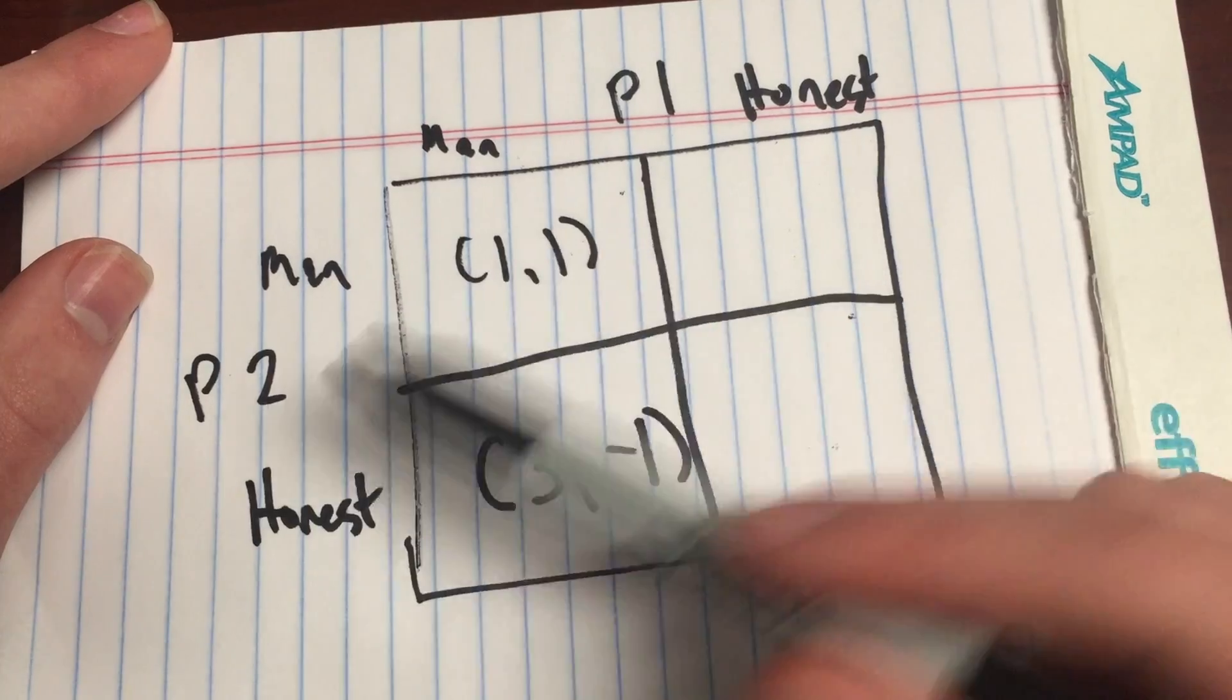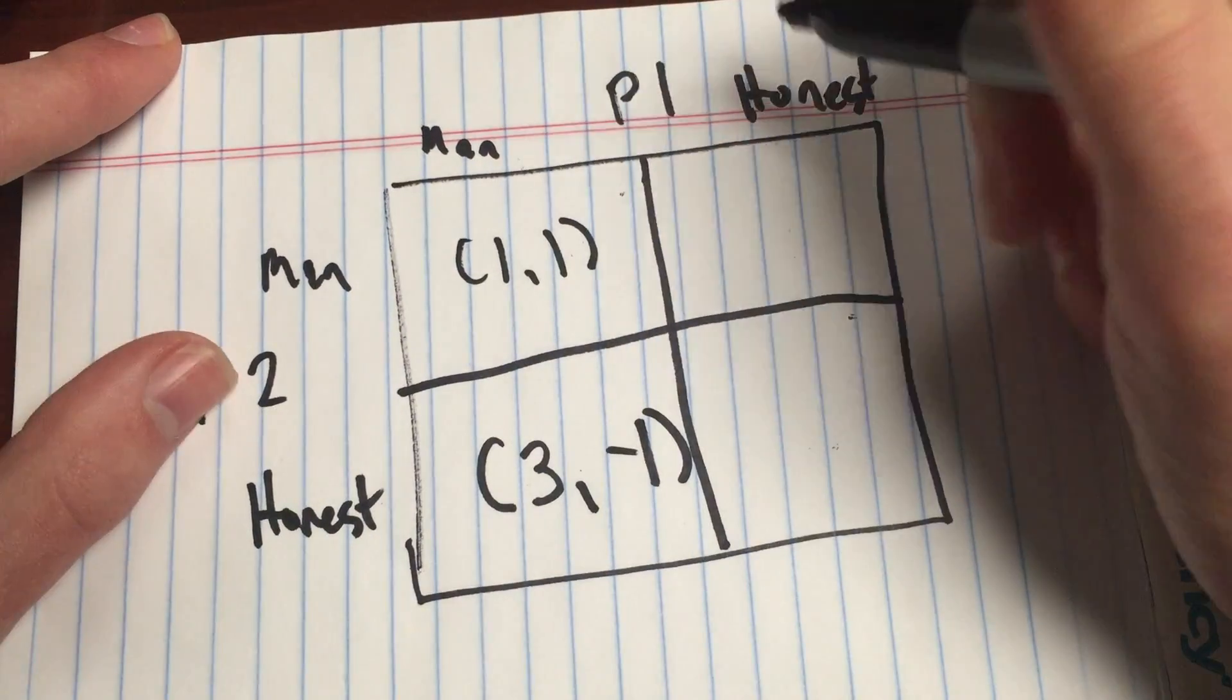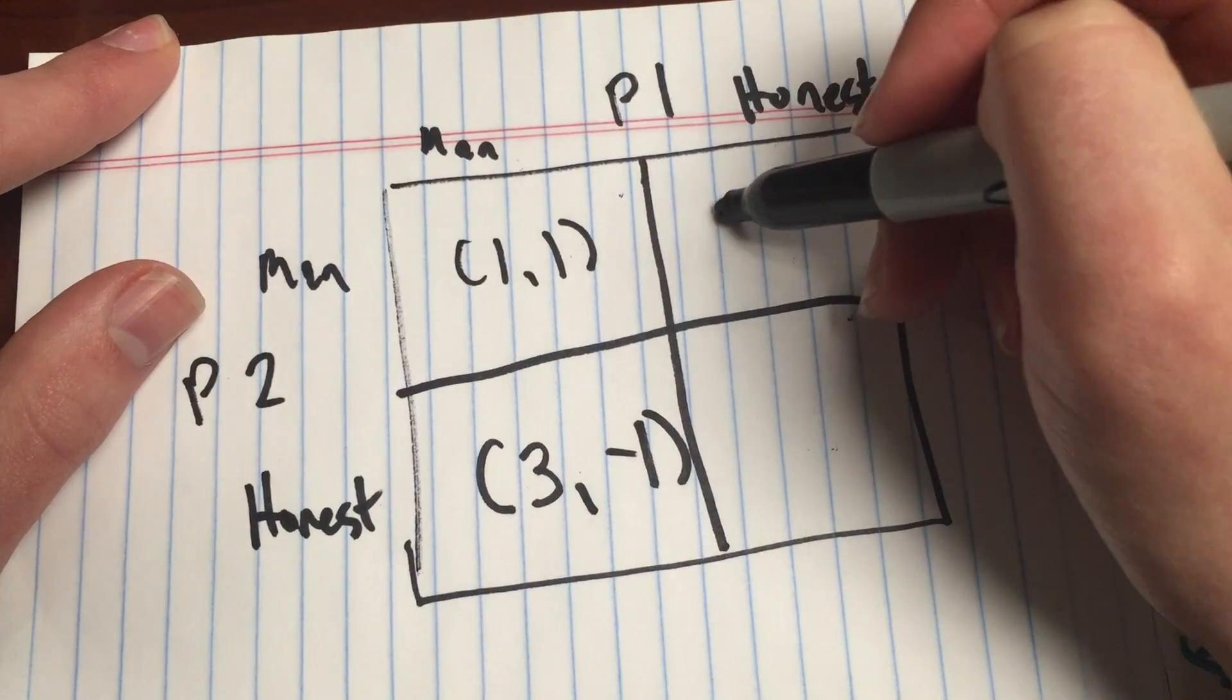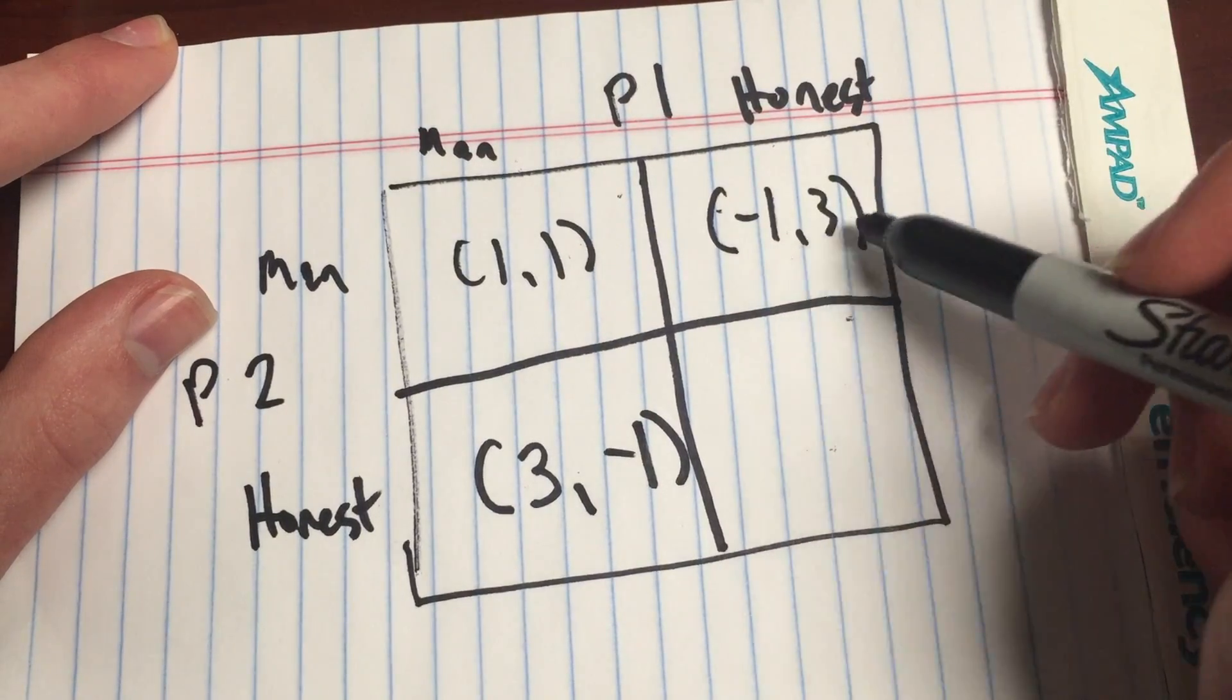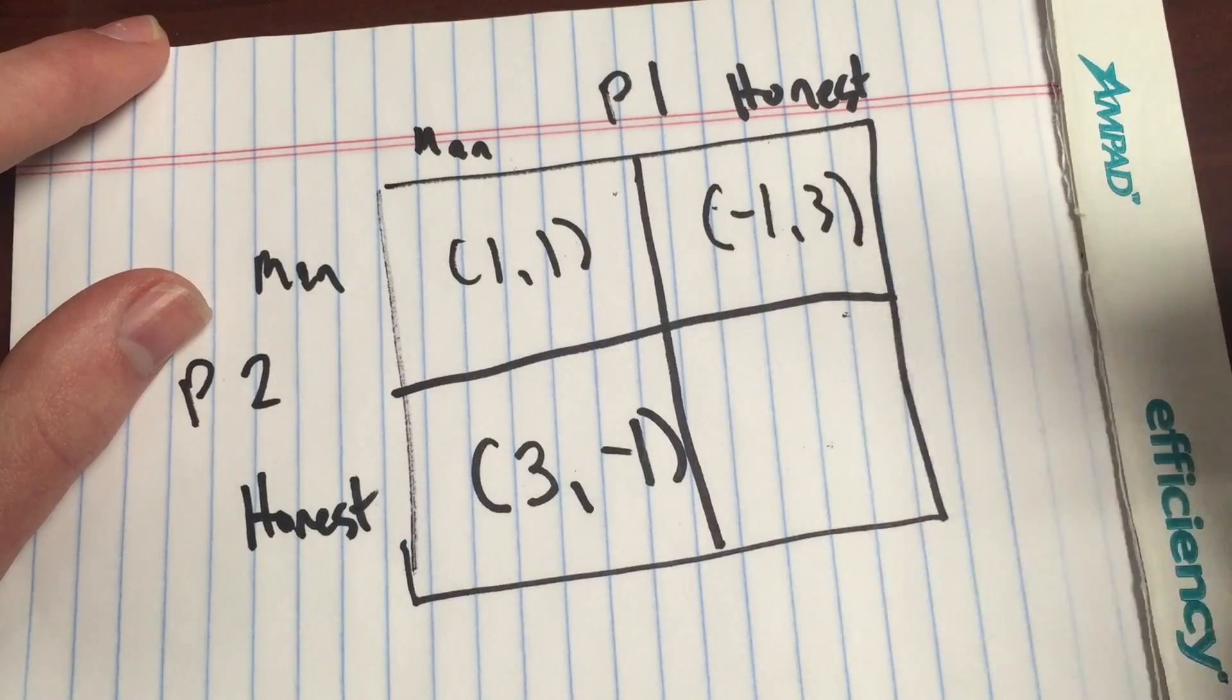Now, this works the opposite way as well. Player two might be the manipulative one and player one might be the honest one, in which case the rules are simply reversed here, where player two would derive the maximum benefit.